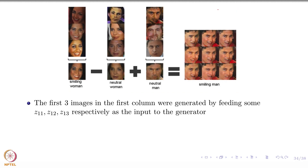The other stuff that you can do is something similar to what we had in the case of word2vec, where you had king minus man plus woman equals queen. Something similar is happening here. If you look at these first three images, they were generated by some vectors Z11, Z12, Z13. We — as in the authors of the paper, which does not include me — just observed the images.